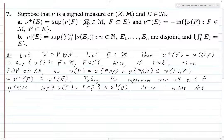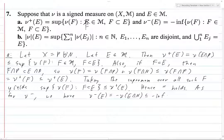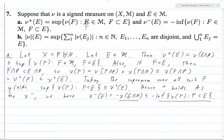As for ν⁻, we have ν⁻(E) equals negative ν(E ∩ N), because this is a positive measure. So this is less than or equal to negative the infimum over all ν(F) with F subset E. This is because ν(E ∩ N) is greater than or equal to the infimum of all such terms, and when you put in negative signs the inequality flips.